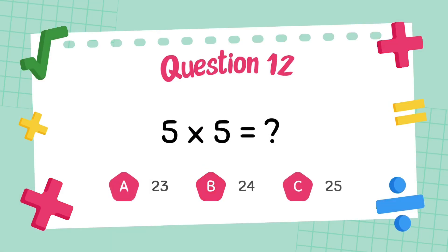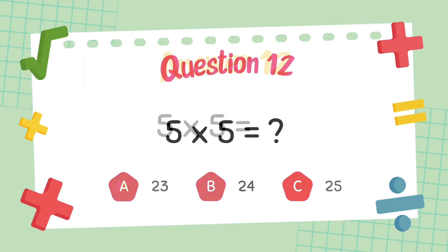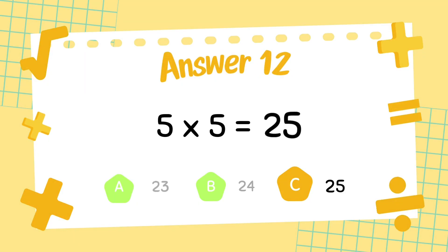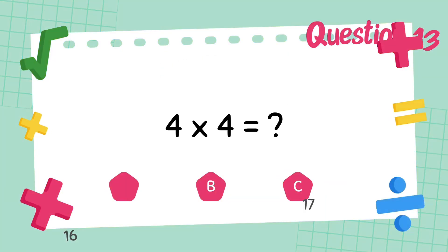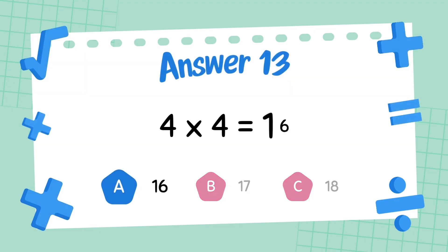What is 5 multiply 5? The answer is 25. What is 4 multiply 4? The answer is 16.